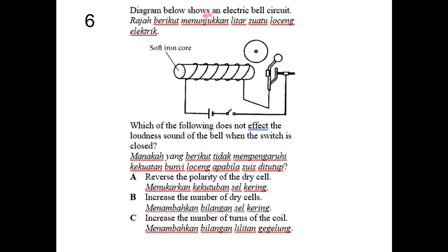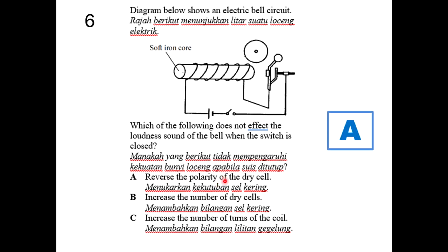Question 6: an electric bell circuit — which factor does not affect the loudness of sound? Reversing the polarity of the dry cell does not affect loudness. Increasing the number of dry cells or increasing the number of turns would affect it. The answer is E: reverse the polarity of the dry cell.